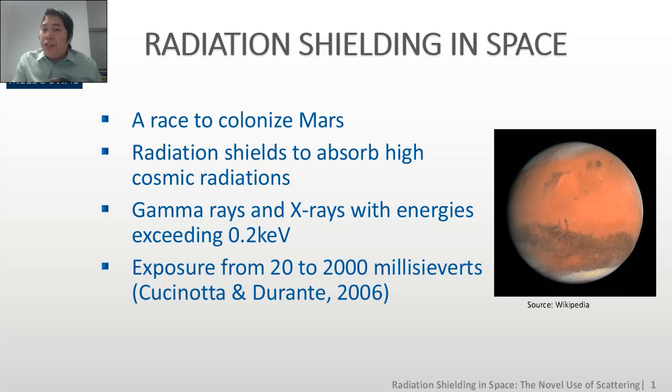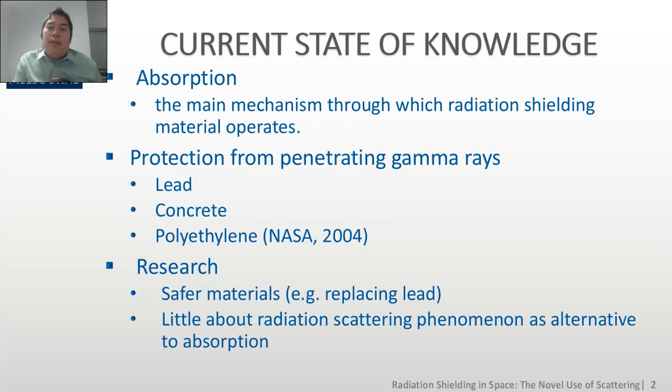These shields aim to stop radiation in the form of X-rays and gamma rays with energies exceeding 0.2 kilo electron volt. However, even with such protection, astronauts or cosmonauts are still being exposed to radiation levels ranging from 20 to 2000 mSv for a typical six-month journey to the International Space Station, which evidently puts them at risk of getting cancers.